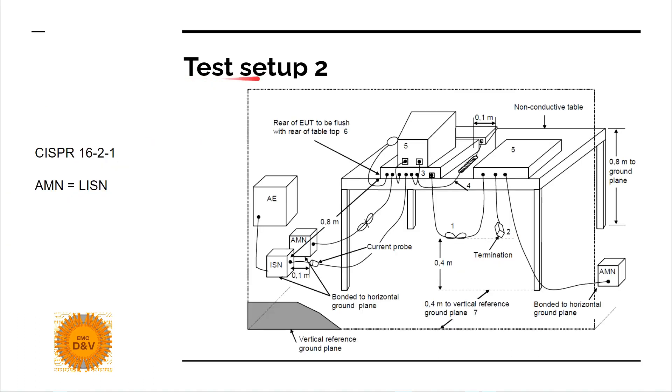Test setup number two is also an example of benchtop device testing, but with two metal walls, one in vertical position and second in horizontal position. This gives you an opportunity to put your LISN or AMN, artificial mains network, on the ground on the metal reference horizontal plane. Then you will have more space on your table to measure your device and auxiliary equipment.